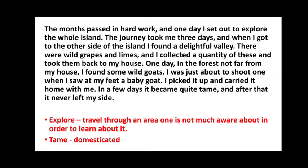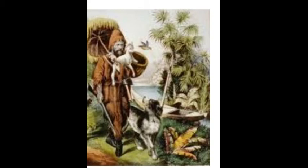One day in the forest not far from my house I found some wild goats. I was just about to shoot one when I saw at my feet a baby goat. I picked it up and carried it home with me. In a few days it became quite tame, and after that it never left my sight. The little goat became domesticated and would always follow Robinson Crusoe around like a pet, becoming a companion for him on the lonely island.